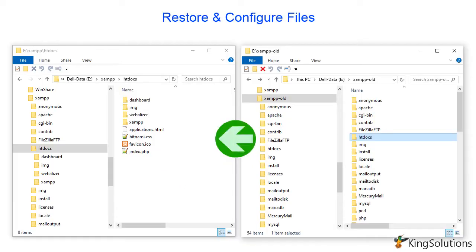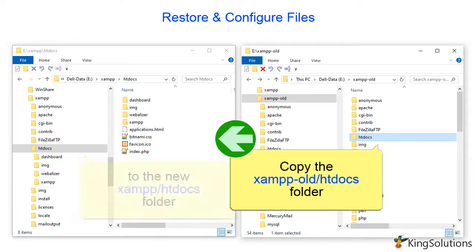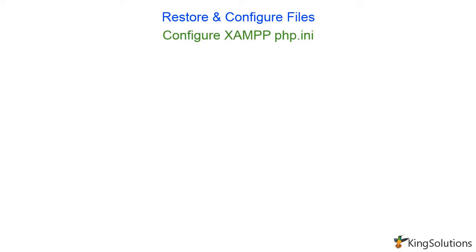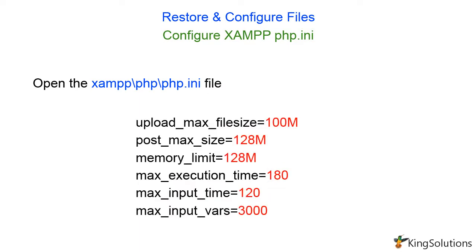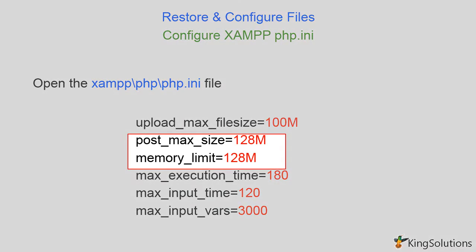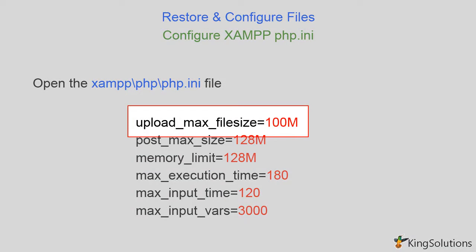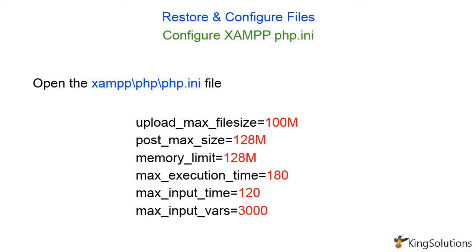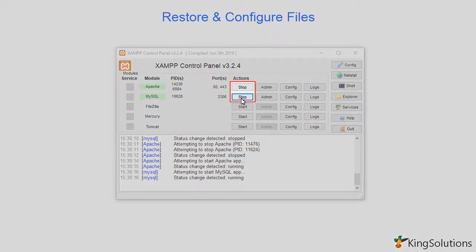Now it's time to restore your old XAMPP file structure. Copy the xampp_old/htdocs folder to the new xampp/htdocs folder. You will also likely need to restore your XAMPP php.ini configuration. Open the xampp php.ini file for editing in your text editor and set the values you require. For a WordPress development system, remember that both post_max_size and memory_limit need to be larger than upload_max_filesize — make them both high enough so large files can work on the server. Now restart both Apache and the MySQL server.